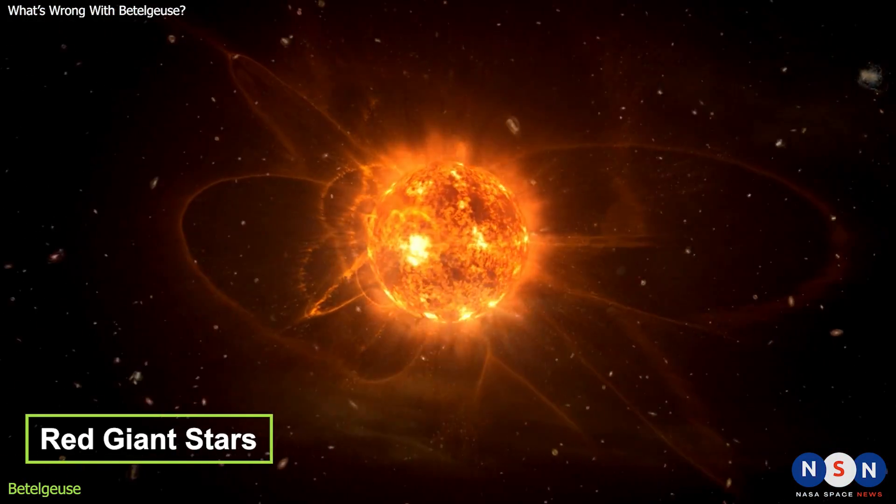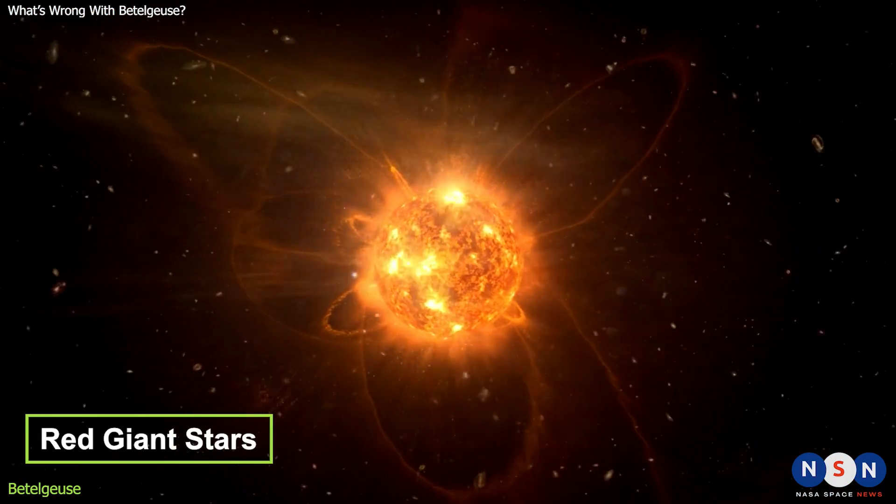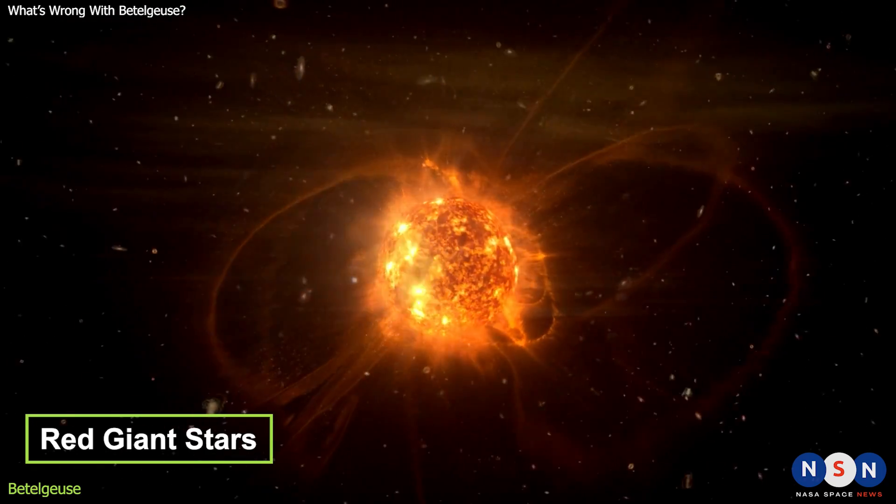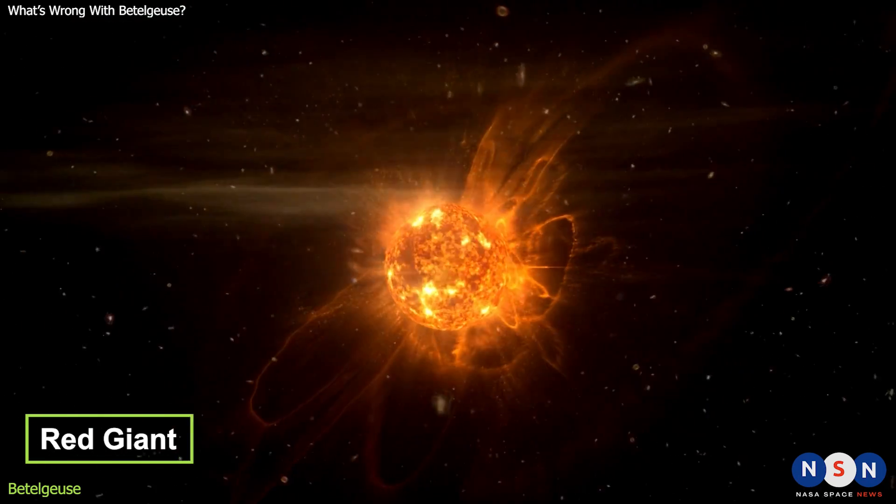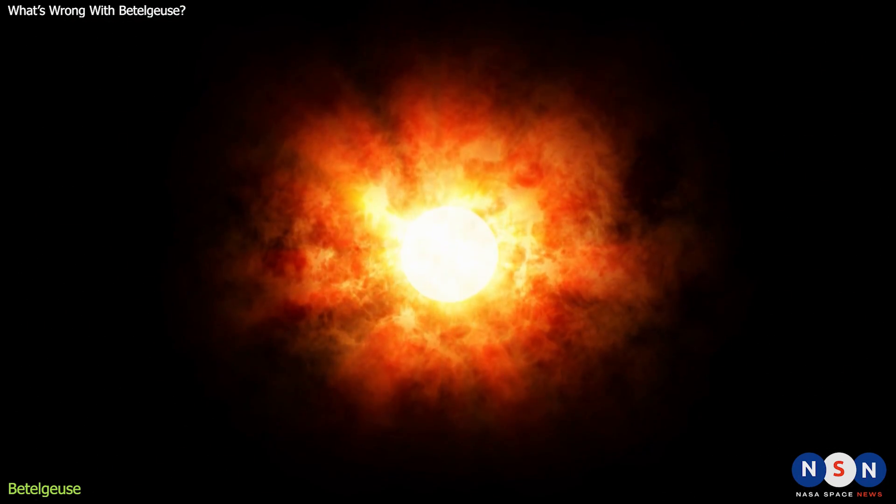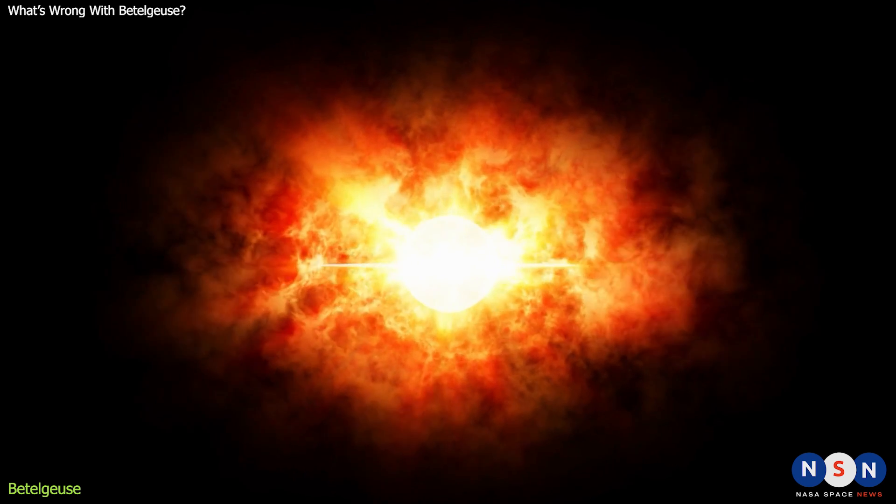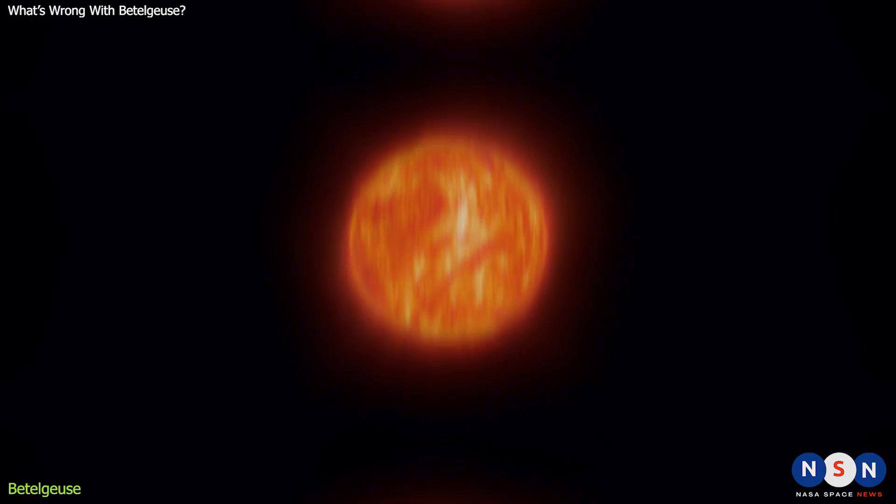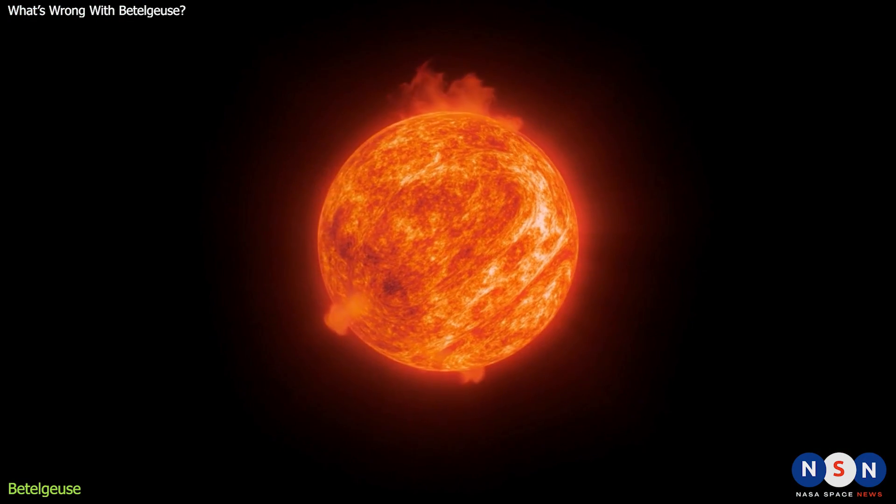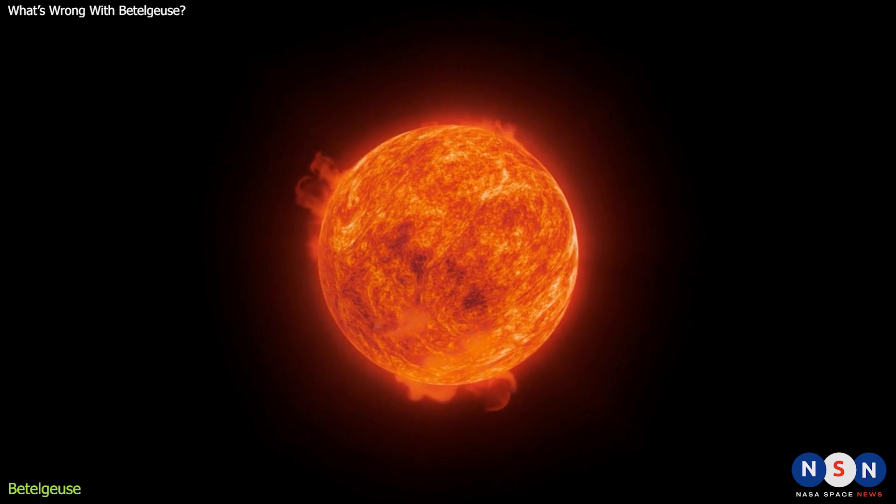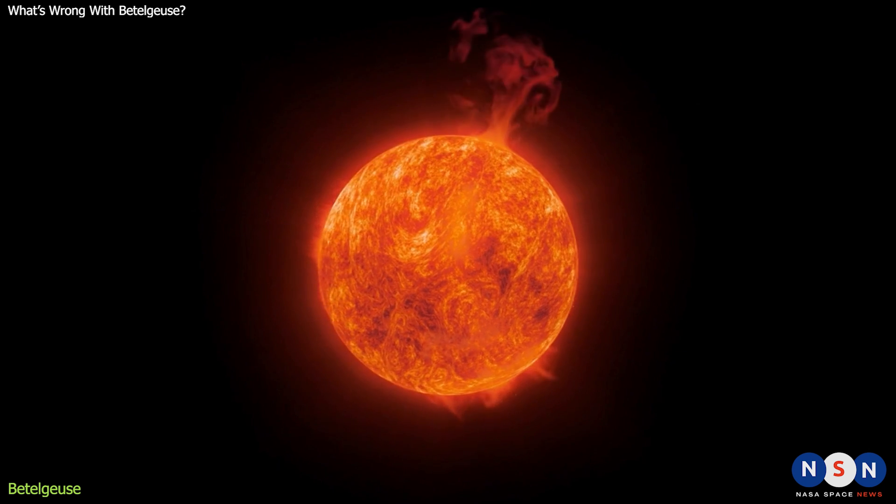Red giants are stars that have reached the end of their life cycle. They have burned through most of their hydrogen fuel and started to fuse helium into heavier elements. As a result, they expand and cool down, becoming larger and redder. But Betelgeuse is not just any red giant. It's a supergiant, one of the largest and most luminous stars in the universe.